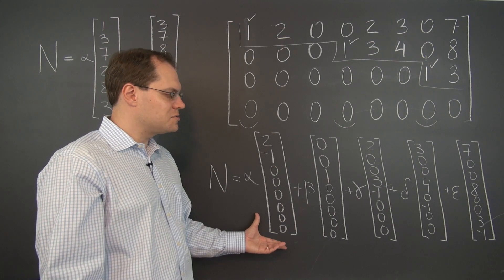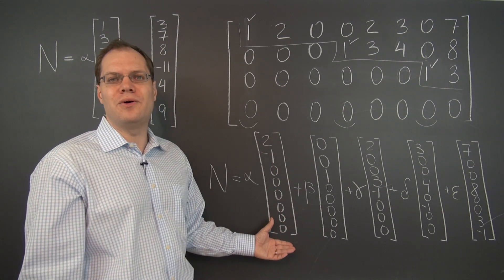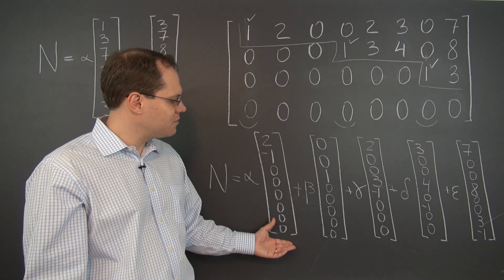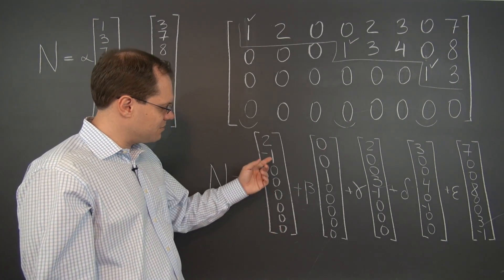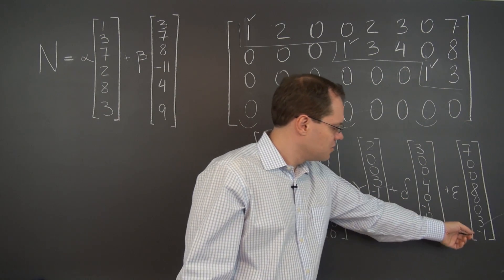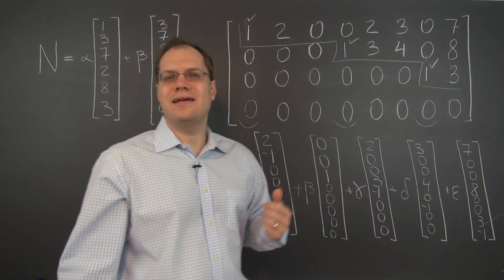If the null space is given in this perfect form, this perfect form that in its own right kind of looks like the row reduced echelon form of something, because you have these leading ones or minus ones.